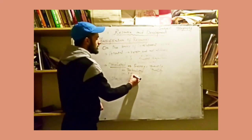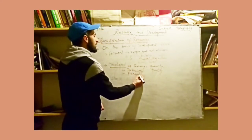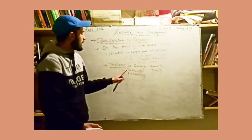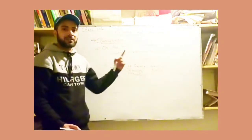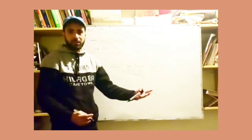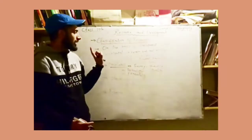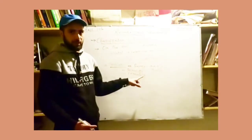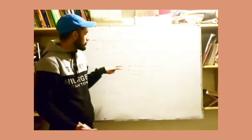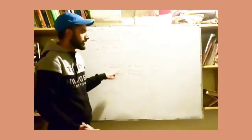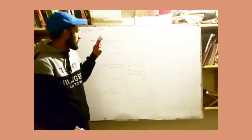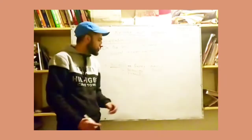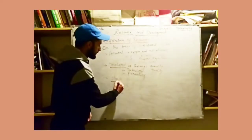Whether we can use a developed resource depends on two things: number one, the technology we have, and number two, economic feasibility. If both are available, then we can use the resource and it is called a developed resource.